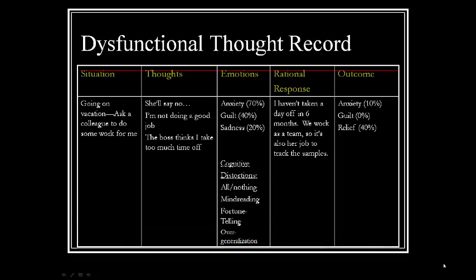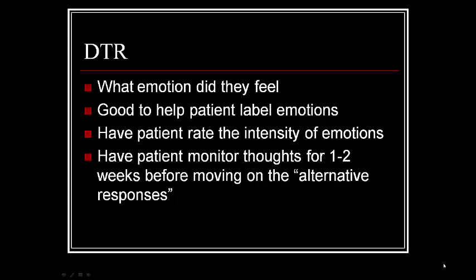Here's another dysfunctional thought record. We're not going to do the last two columns right now. The situation was going on a vacation and asking a colleague to do some work. The thought was: she'll say no; I'm not doing a good job; the boss thinks I take too much time off. The emotions were anxious 70%, guilty 40%, sad 20%. You can also have patients label the cognitive distortions here — like all-or-nothing thinking, mind reading, fortune telling, overgeneralization. You also want to note the degree to which the patient believes those thoughts or the extent to which they feel those emotions.